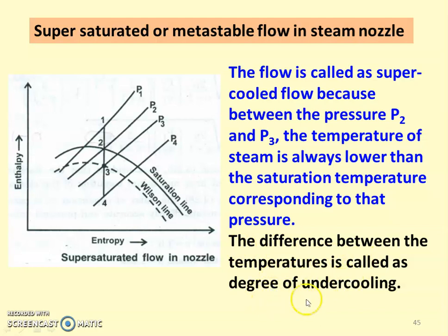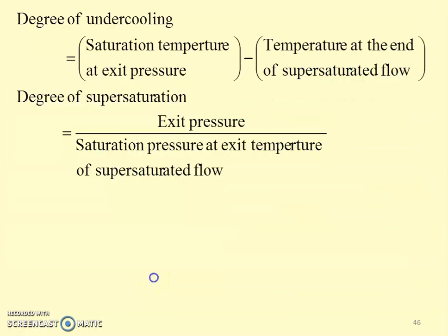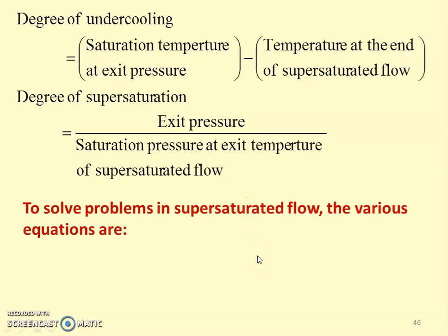The difference between the temperatures is called the degree of under cooling. The degree of under cooling equals the saturation temperature at exit pressure minus the temperature at the end of the supersaturated flow. The degree of super saturation equals the nozzle exit pressure divided by the saturation pressure at the exit temperature of the supersaturated flow. These two are important parameters in supersaturated flow, and we use the relevant equations to calculate various parameters when solving problems.